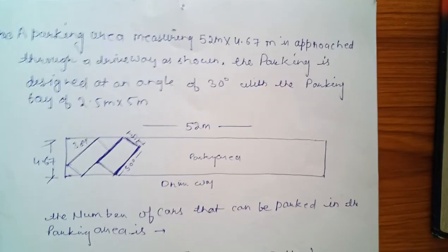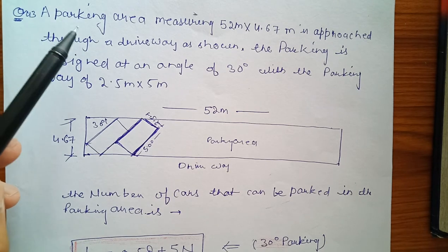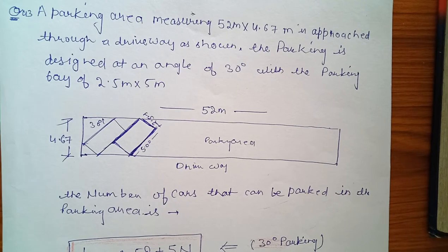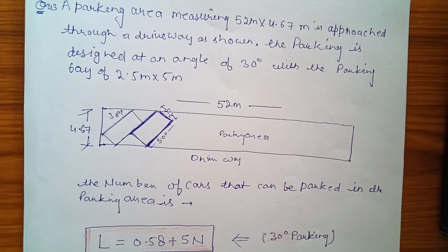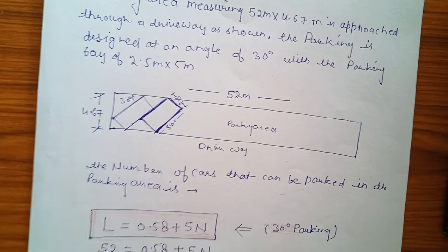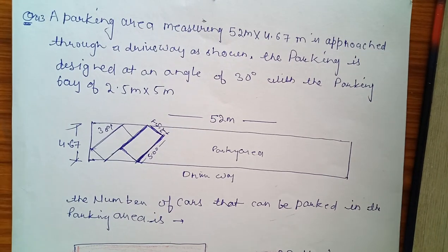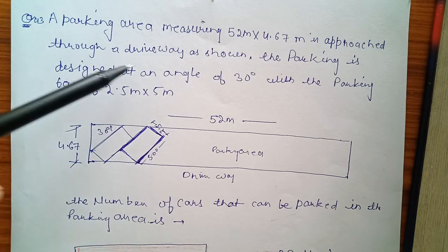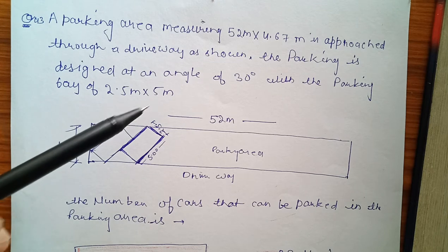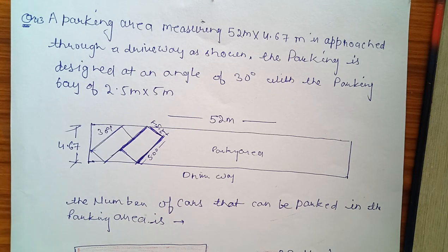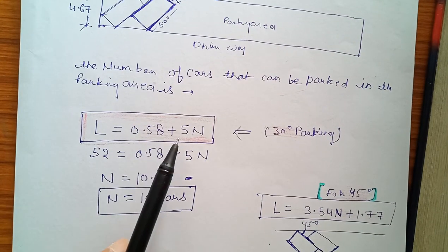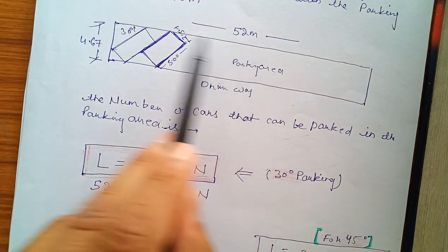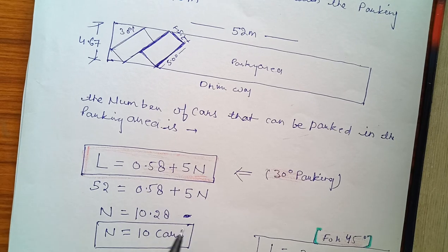Again, the next question was parking. A parking area measuring 52 meters by 4.67 meters is approached through a driveway. The parking is designed at an angle of 30 degrees with the parking bay of 2.5 meters by 5 meters. Here we use the formula L equals 0.58 plus 5N, and this is for the angle of 30 degrees. If the angle is given 30 degrees, we use this formula: total length 52, 0.58 plus 5N, so N equals 10 cars.